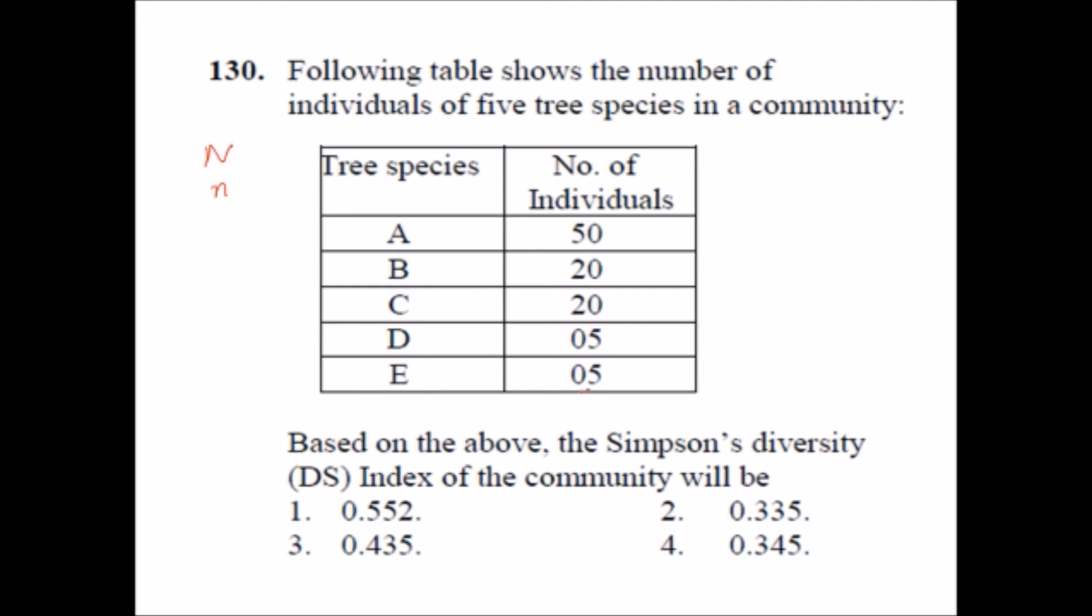First I will continue with this formula which I have shown you and then I will discuss over the next method. Here small n represents the total number of individuals in a community which is n equals 100 if you calculate it. So now what was the formula? The formula was summation of N into N minus 1 divided by small n multiplied by n minus 1.